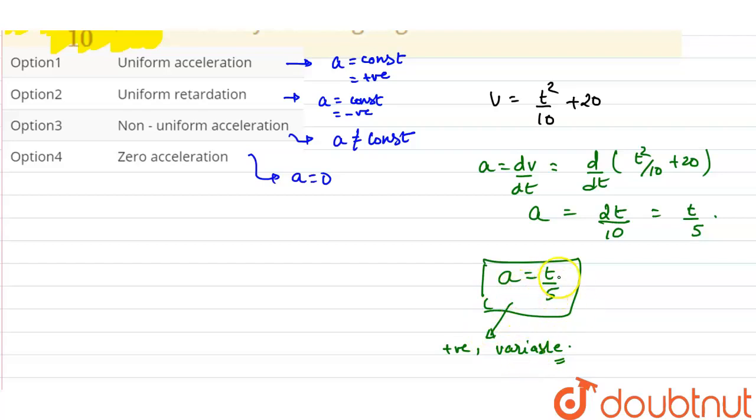But, it is variable as, if we put time as 1, it will be 1 by 5. If we put time as 2, then acceleration will be 2 by 5. So, we can see that with time it is varying. So, our option number 3, that is non-uniform acceleration will be the correct answer.